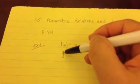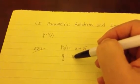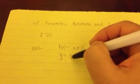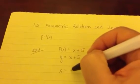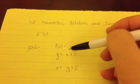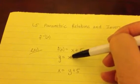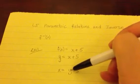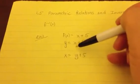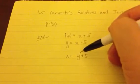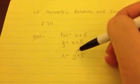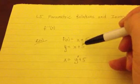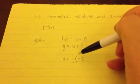Step number 2 is switching the variables — the positions of x and y. We're not switching any signs, not touching the 5, just literally switching x and y positions. So the new equation is x equals y plus 5. To keep track, we'll write a y prime — that little notch on top — so we don't forget which is our inverse equation at the end.